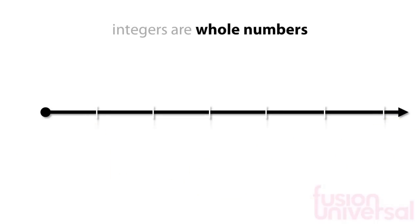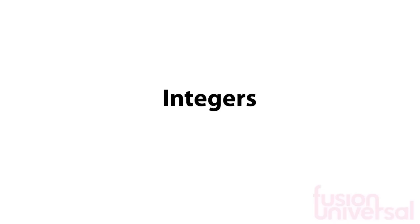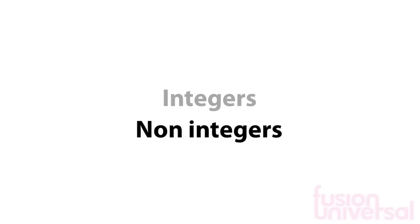So integers are whole numbers, and 0 is an integer. We have just looked at what an integer is, so now let's look at numbers that are not integers.